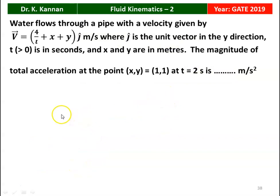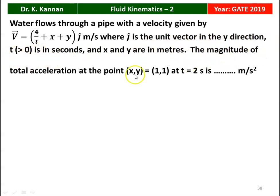Next question from the 2019 Question Paper: water flows through a pipe with velocity v = [4/(t + x + y)] ĵ m/s, where t > 0 is in seconds and x, y are in meters. Find the magnitude of total acceleration at point (x, y) = (1, 1) at time t = 2 s. The answer is 3 m/s².